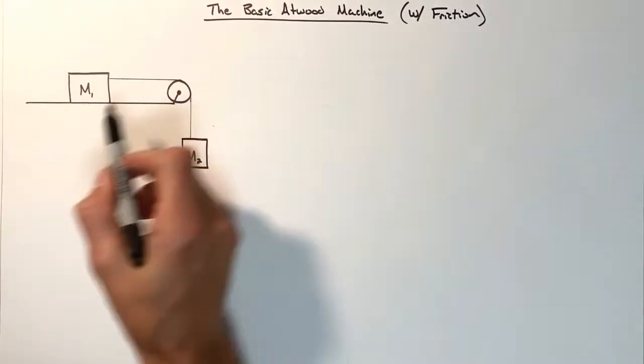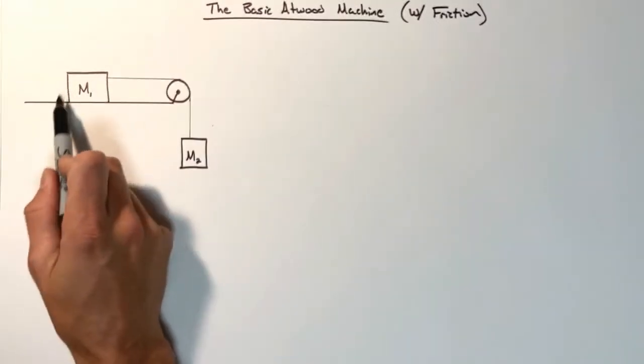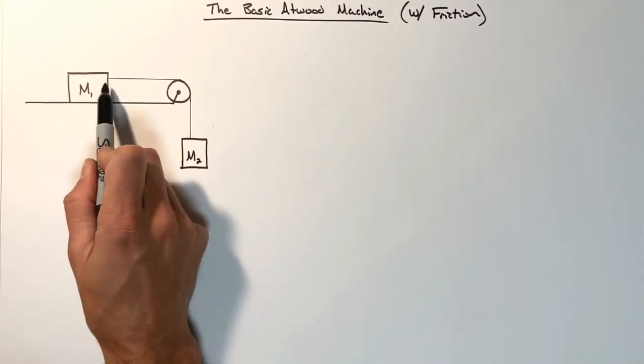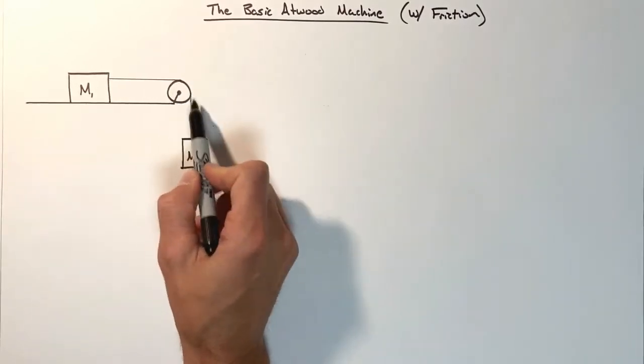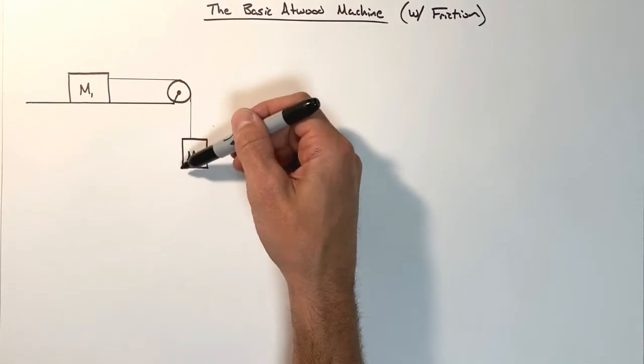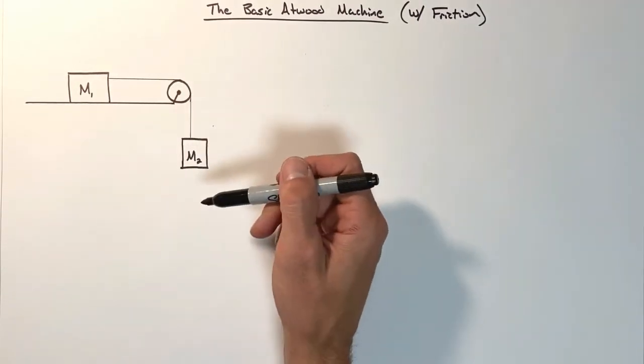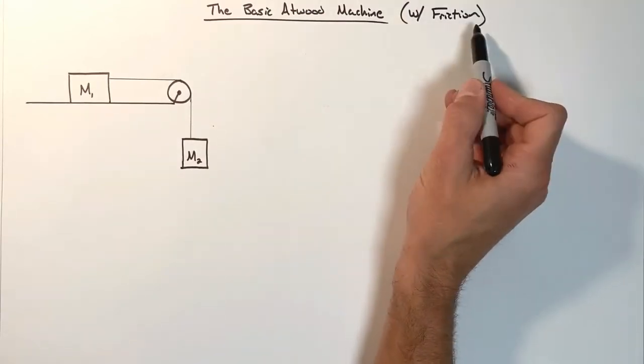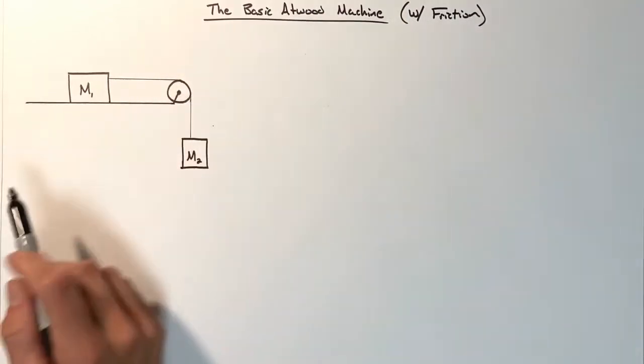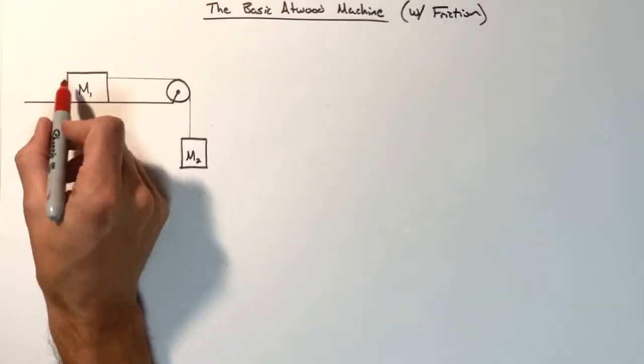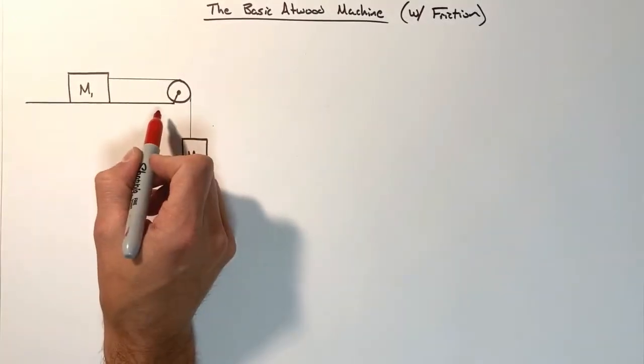Today we're going to take a look at the basic Atwood machine. Just like we've seen before, this is a block sitting on a level surface connected by a massless string which runs over a frictionless pulley. That string runs down to a second block which is hanging. What we're going to do today that's a little bit different is we're going to throw friction in here, not in the pulley, but friction between the block and this horizontal surface.